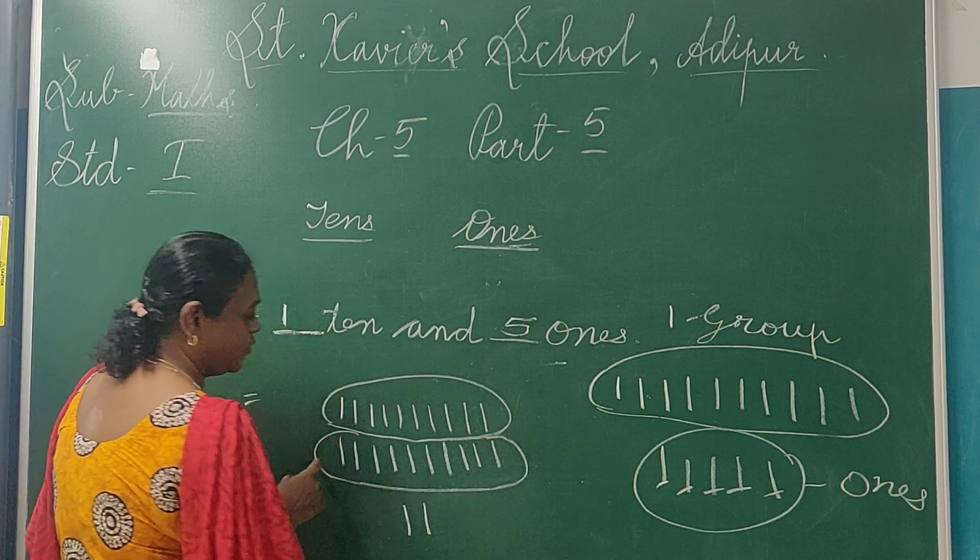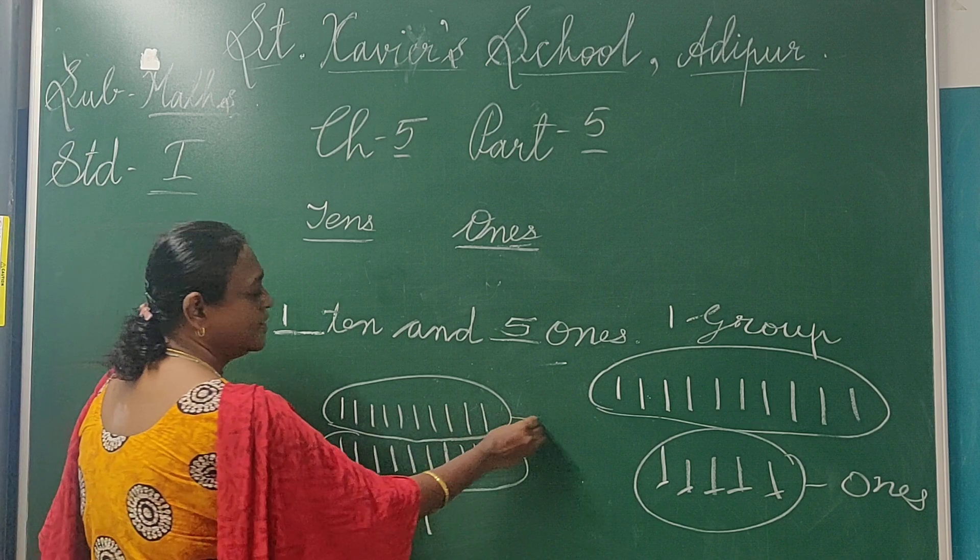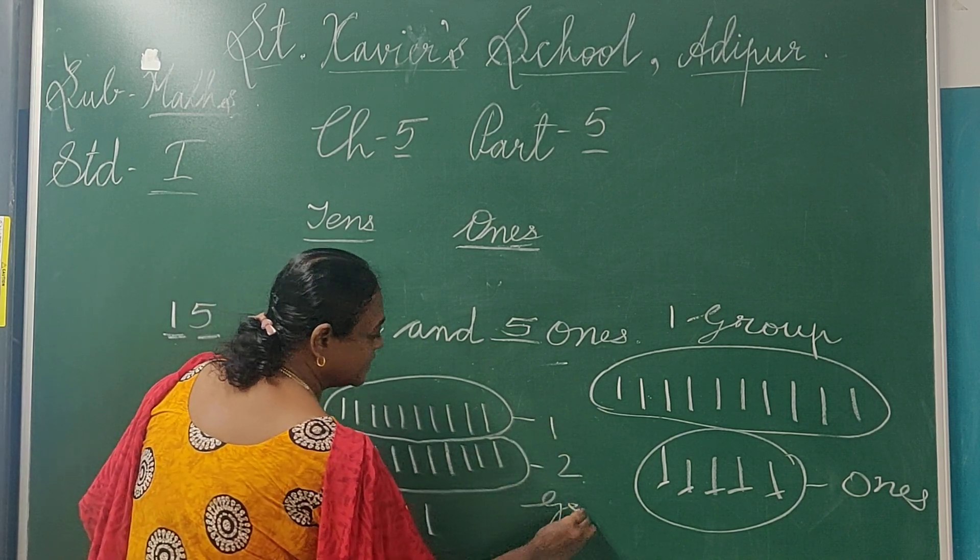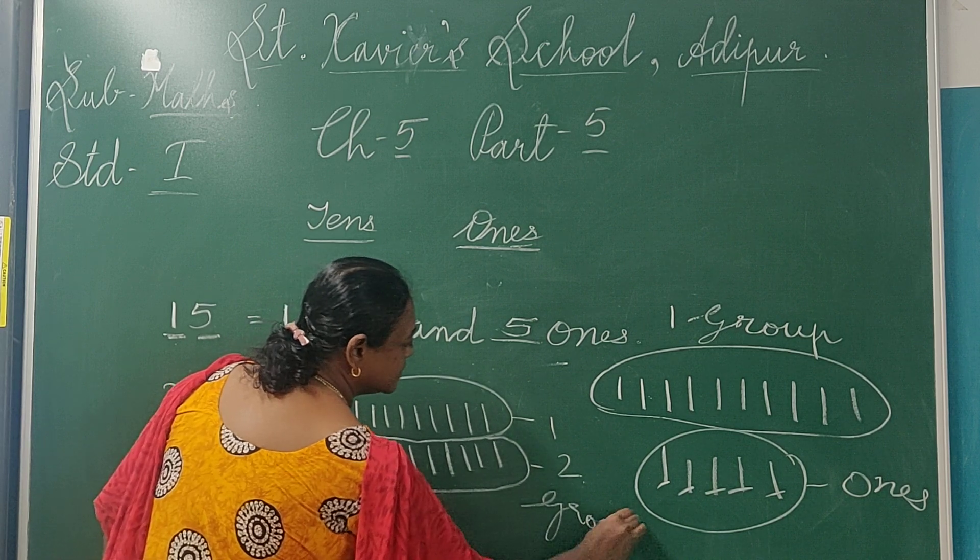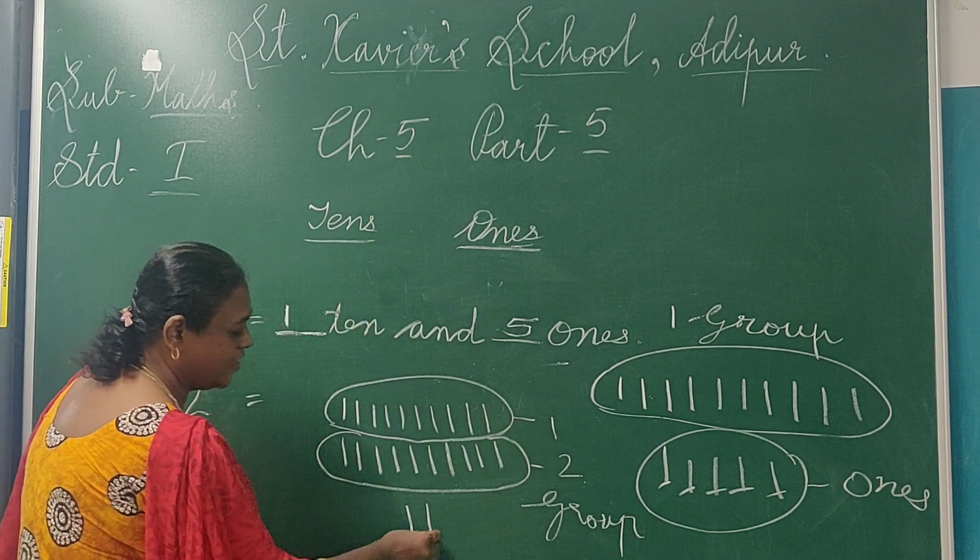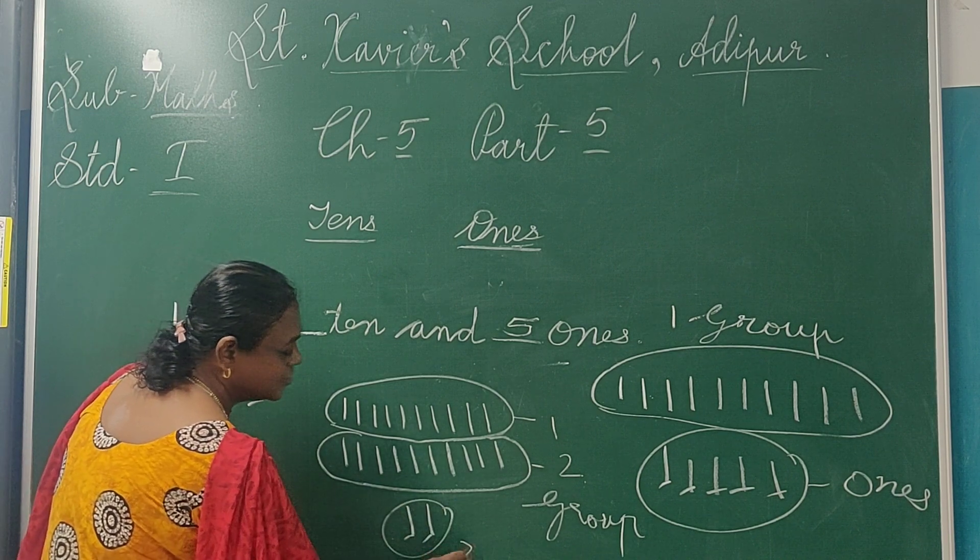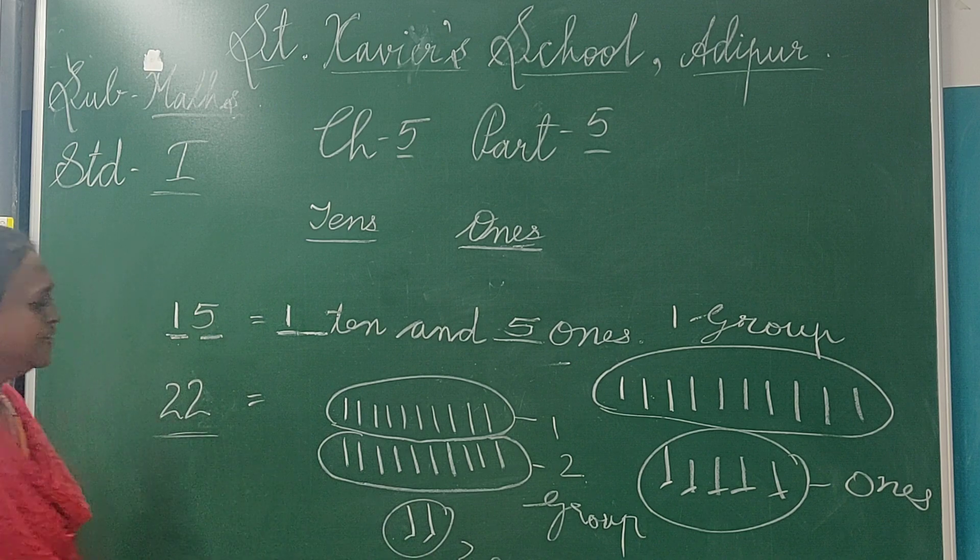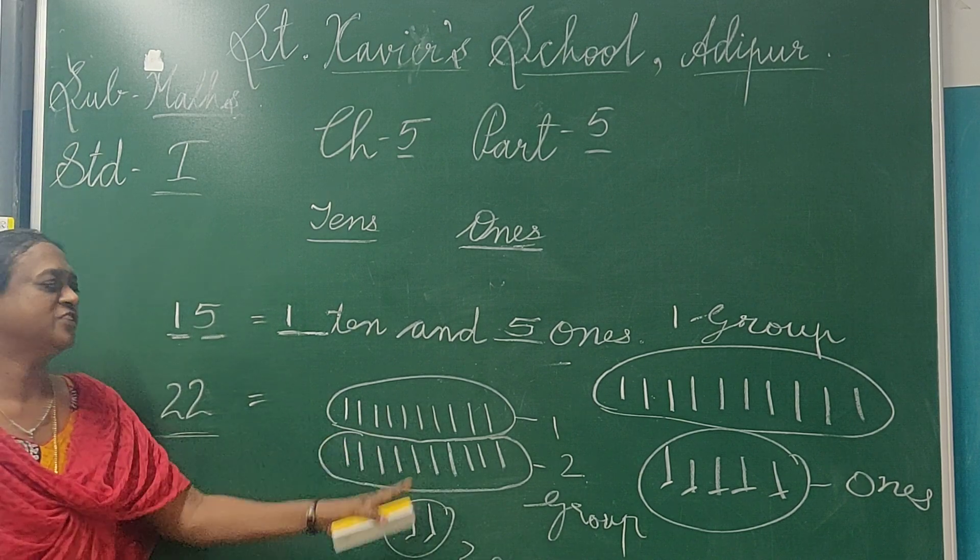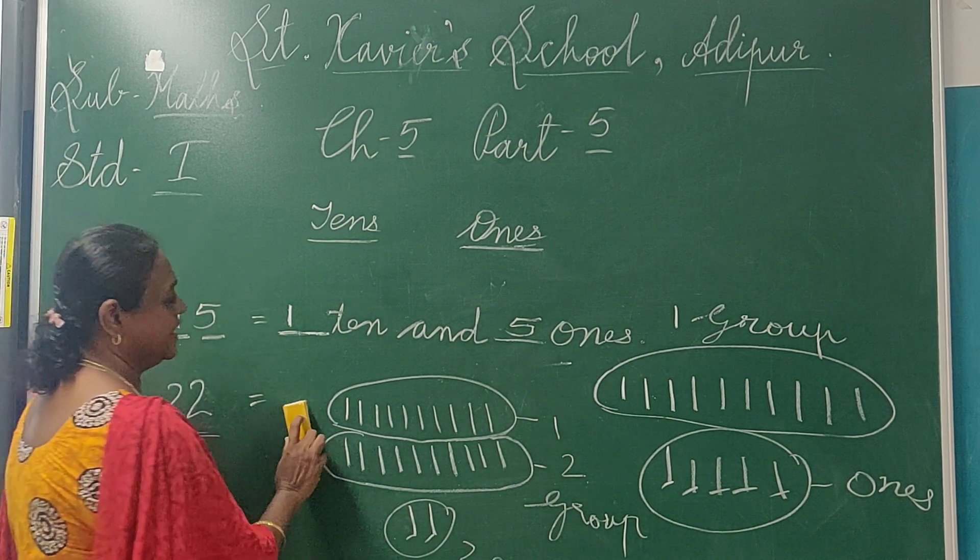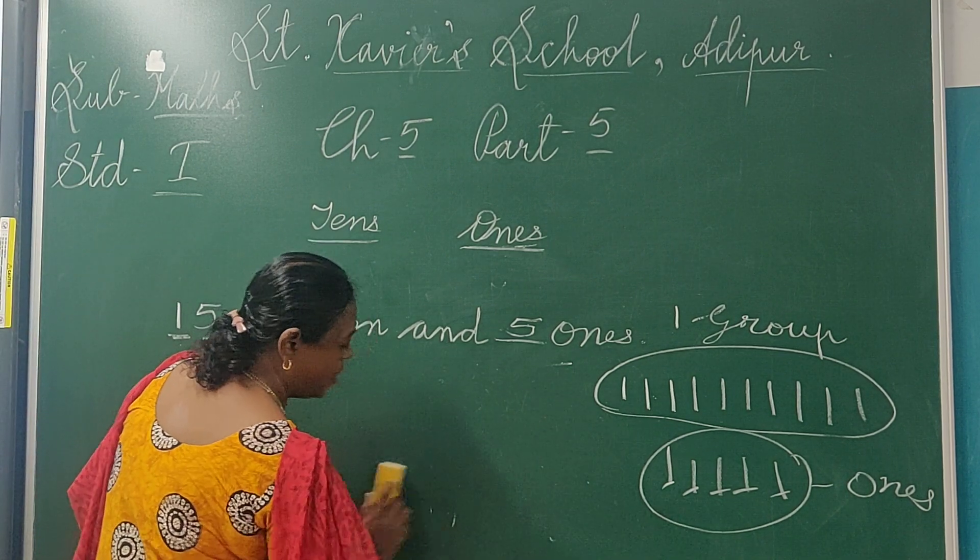2 groups. Ten ke kitne groups hain? Number 1, number 2, so 2 groups. Ten ke kitne groups hain? 2 groups. Aur ones kitne hain? 2 ones. Okay, understood? 2 groups of 10. Ten ke kitne ko alag alag groups banana hai aur aapko likhna hai.